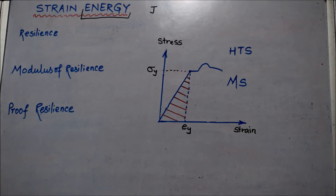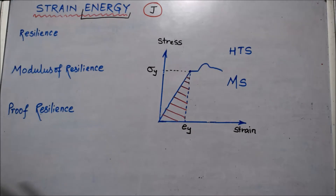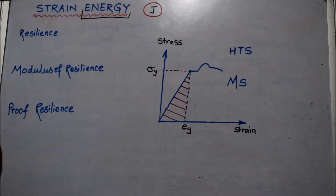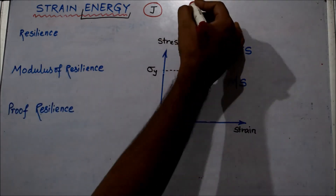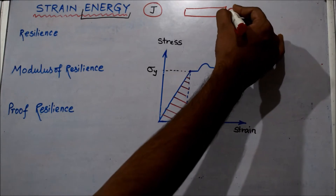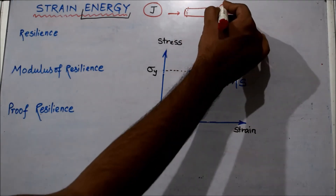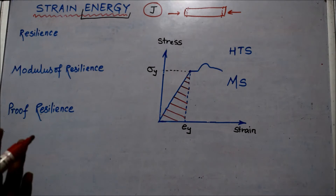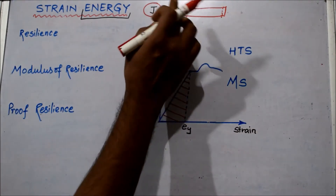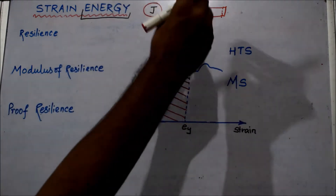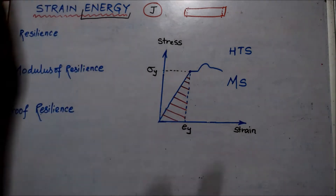Whether it is strain energy, atomic energy, hydro power energy, or any other kind of energy, the SI unit will remain Joule. Strain energy in physics is considered as the ability of a material to absorb energy when it has deformed elastically and release the same energy when you unload it. For example, if a force is applied on a specimen and it undergoes elastic deformation, when the load is removed it regains its original shape and size, but has some energy stored inside it. This energy is called strain energy.